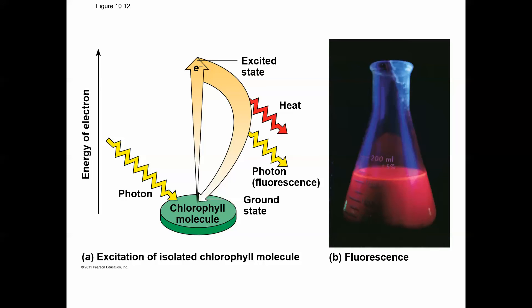One unique property of chlorophyll is that as it gains light energy, its electrons get excited. Those excited electrons can be used to do work, such as produce ATP. If you destroy a leaf, grind it up, and excite electrons in a lab, they will have nowhere to go, and as they lose their energy, some of it will shine back out as red light — fluorescence, which we should see in lab later this semester.